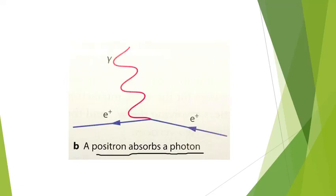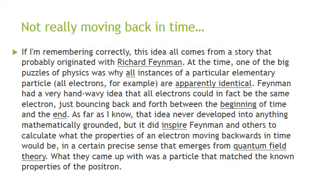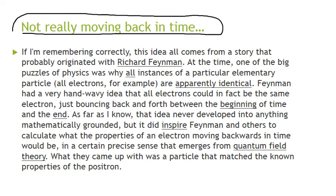A positron absorbs a photon. Since time is going from left to right, it looks like these positrons are going against time and absorbing — it looks like the electron is going here, absorbing this, and then going this way. But we're not really moving back in time. That was something I wanted to find a good explanation for — why the diagrams are the way they are. You can pause the clip and read through this to understand these diagrams better.